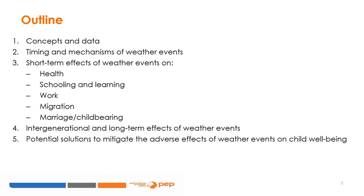Section 3 introduces those outcomes, which affect health, schooling and learning, work, migration, marriage and fertility, and presents the main findings of economic literature on the short-term effects of weather events on each of them. We discuss in Section 4 the long-term effects of weather events, and we conclude by discussing the potential solutions to mitigate the adverse effects of weather events on child well-being.